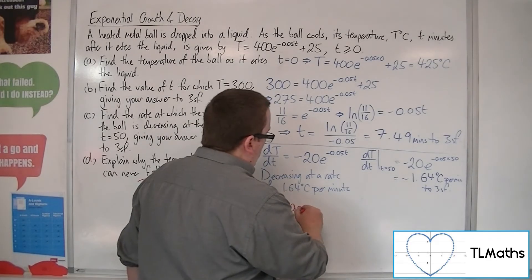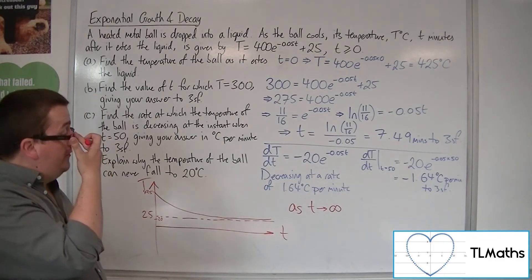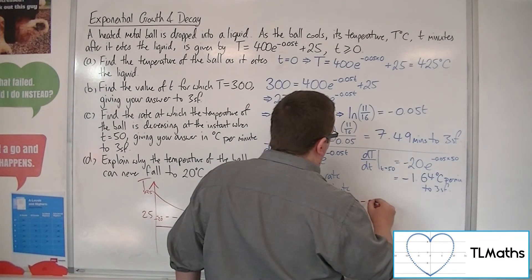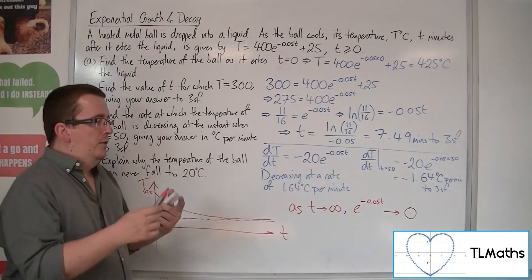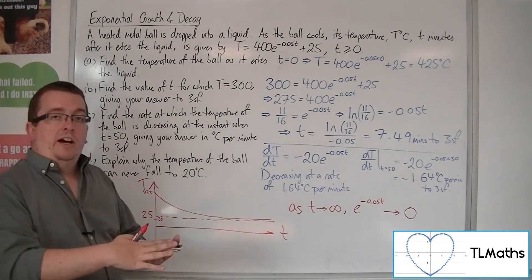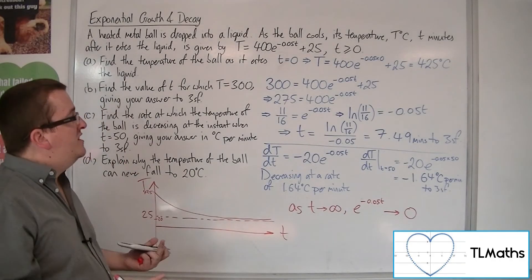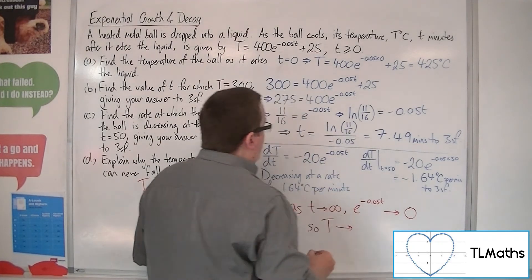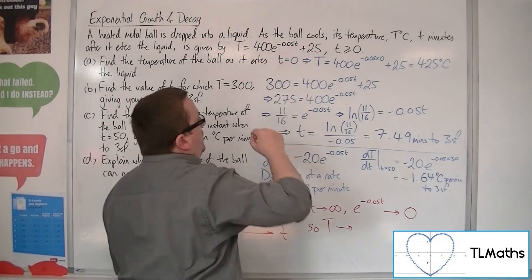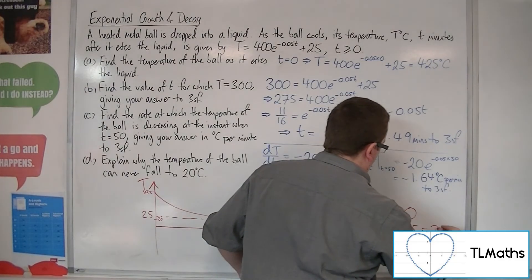So, as part of your answer, you really want to say, as t gets larger and larger and larger, as it tends to infinity, e to the minus 0.05t will tend to 0. So, as the t gets larger and larger and larger, you've got e to the minus of a larger number, and so that's getting closer and closer to 0. And so, the temperature is getting closer and closer and closer to 400 times 0 plus 25. So, 25.